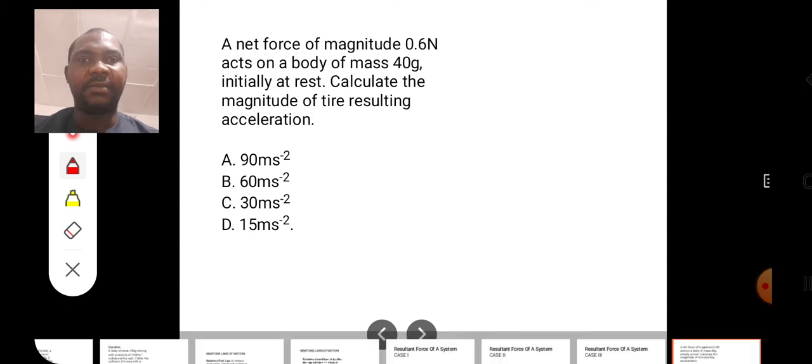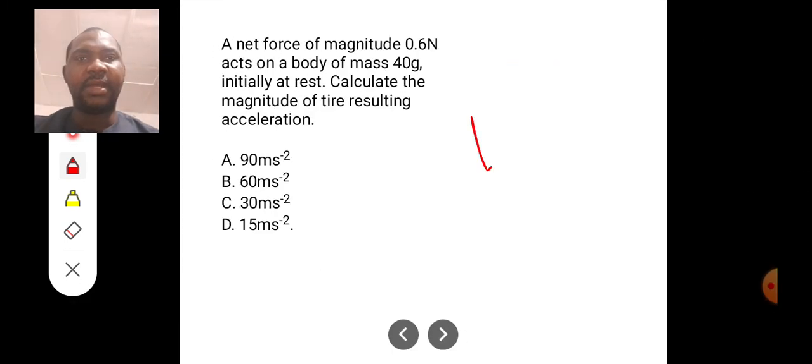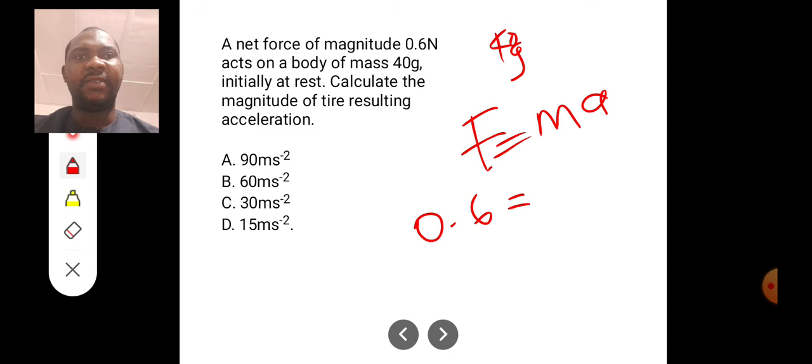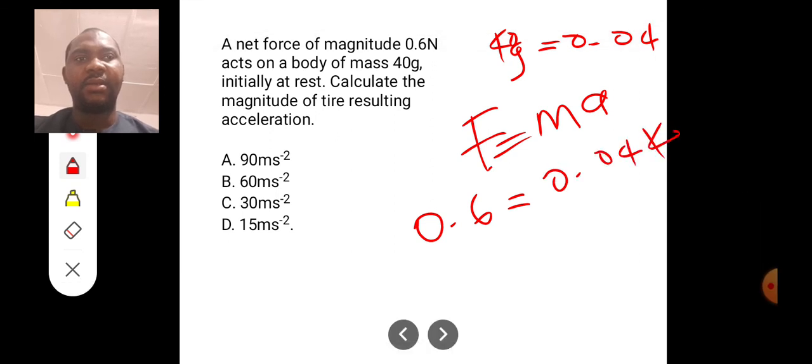We can simply apply the formula that force is equal to mass times acceleration. The force here is 0.6 N equal to mass is 40 grams. 40 grams divided by 1000 will give us 0.04 kilograms. So I have 0.04 kilograms, then multiply by A.